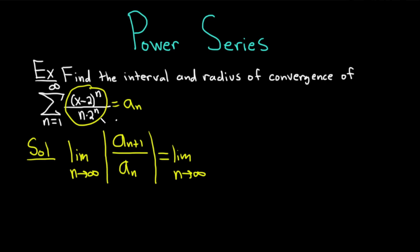What you see inside the sum is equal to a sub n. So a sub n is x minus 2 to the n over n times 2 to the n. A sub n plus 1 is the same thing except we replace all the n's with n plus 1's. So we'll get x minus 2 to the n plus 1 over n plus 1 times 2 to the n plus 1.